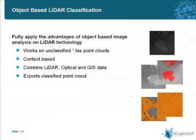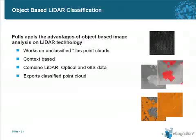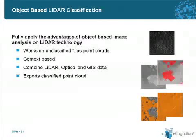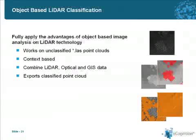Once you have the classification done, we come to the export, and here we also offer different possibilities. One export option is to export the classification you have done directly into the original point cloud — no extra file is exported, just the classification added to the points. You can also create a new point cloud with the classified points, or use any of the standard eCognition exports such as raster format or vector layers.